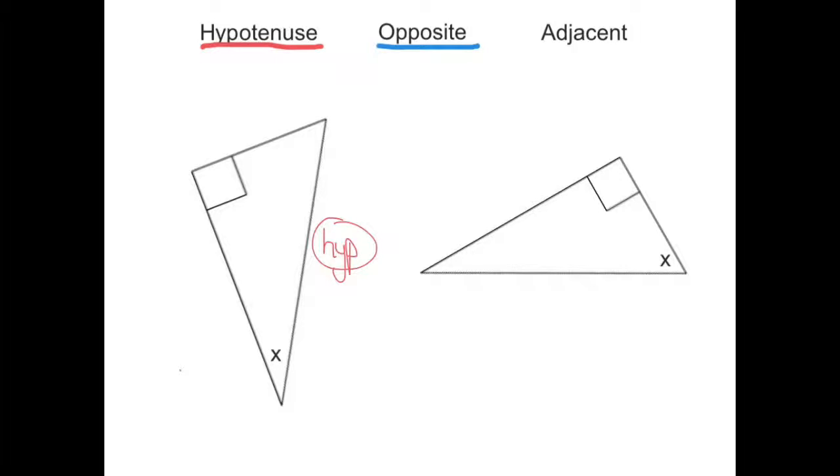And so I label that side the opposite O-P-P. And finally, the adjacent side, this is angle x, is the one that's beside it. So we label this side, funny enough, the adjacent.